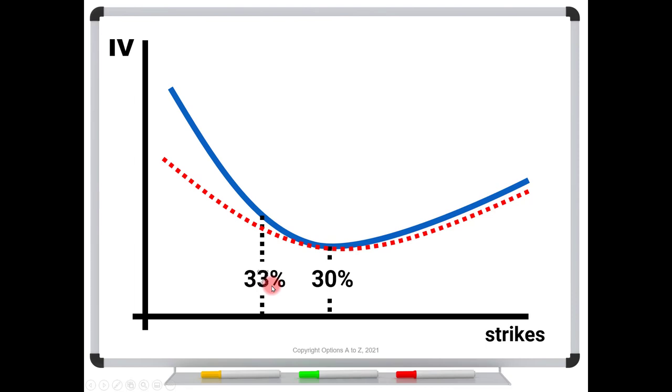Instead, it's fallen down here, maybe to 33%. It's fallen from the expected level on the blue down to here in the red. And in this case, we would say, okay, now the volatility has fallen, but do you see the difference?